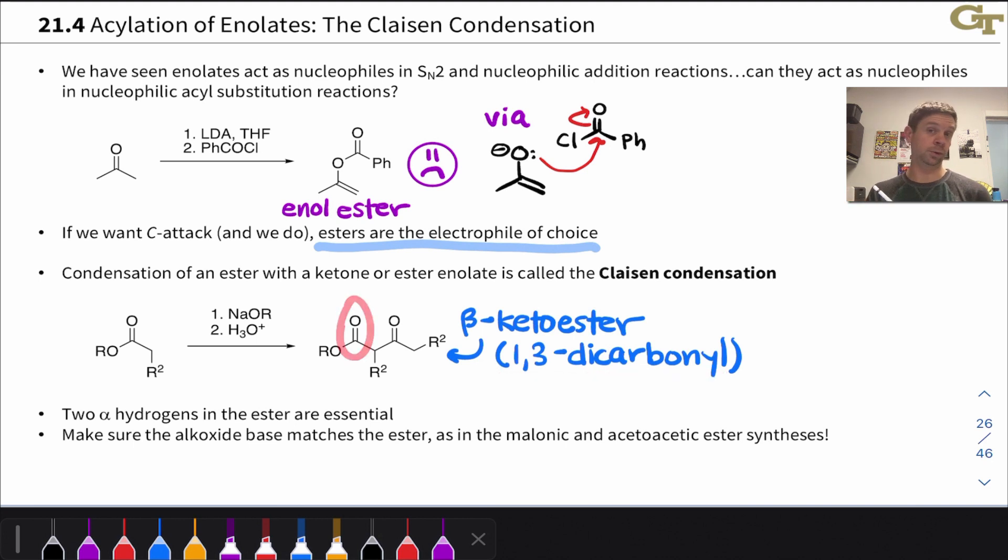What we have here is a 1,3-dicarbonyl compound most generally—we have a carbonyl at carbon one and a carbonyl at carbon three. This structure in particular with an ester group and a ketone carbonyl group in the three position or at the beta position is known as a beta-keto ester, and these are the classical products of Claisen condensations. If you use a ketone enolate, beta-keto ketones and aldehydes are also possible.